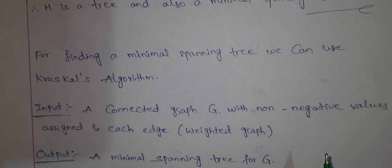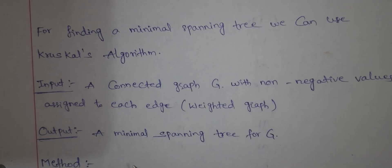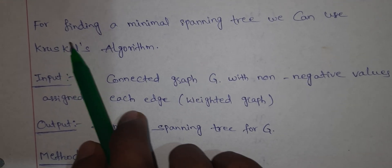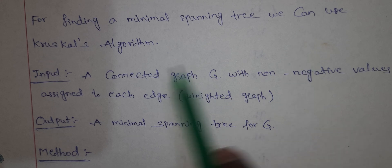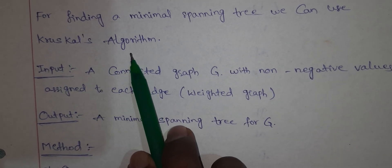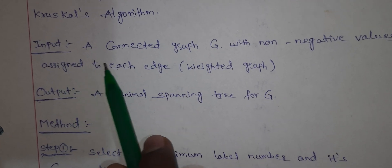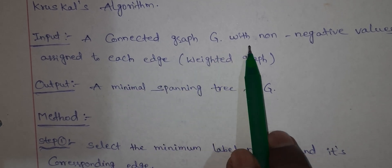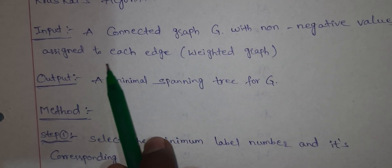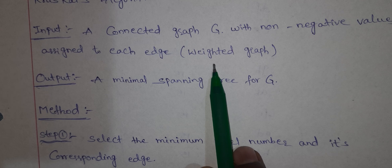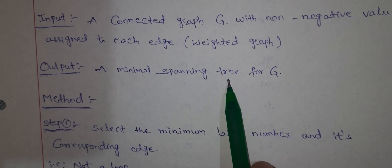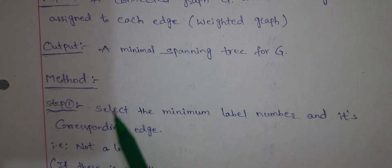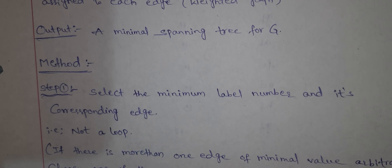So why do we find a Minimal Spanning Tree? For finding a Minimal Spanning Tree, we can use Kruskal's algorithm. Input: a connected graph G with non-negative values assigned to each edge — a weighted graph. Output: a Minimal Spanning Tree for G. We can use Kruskal's algorithm for spanning tree and minimal spanning tree definitions.